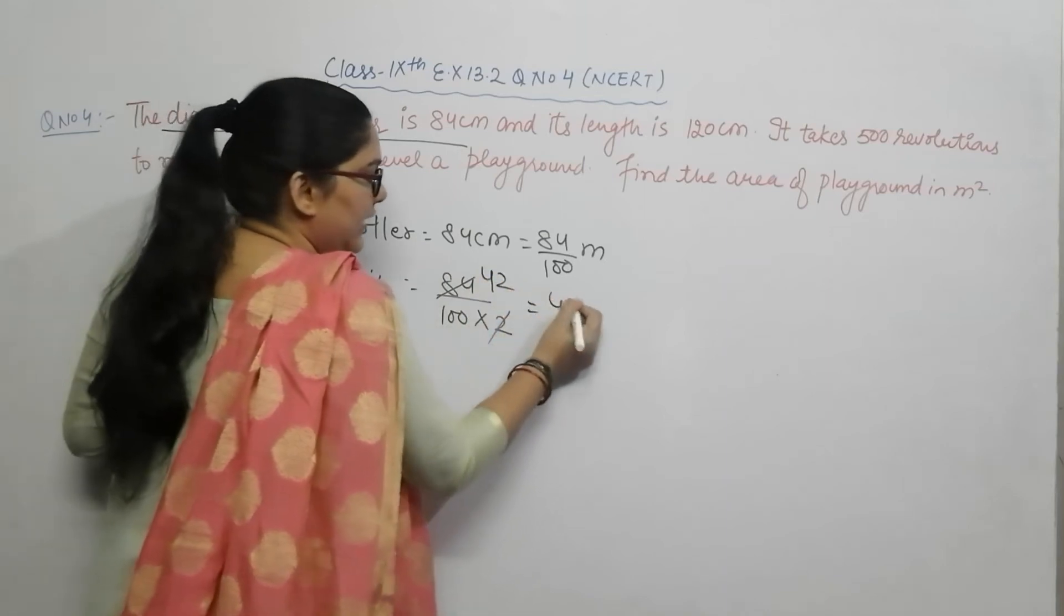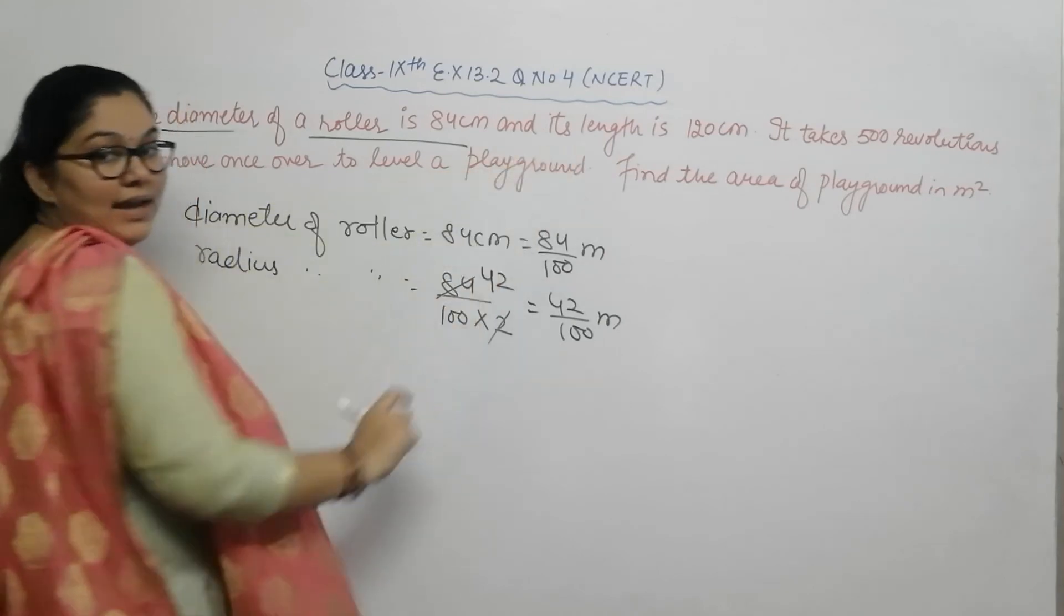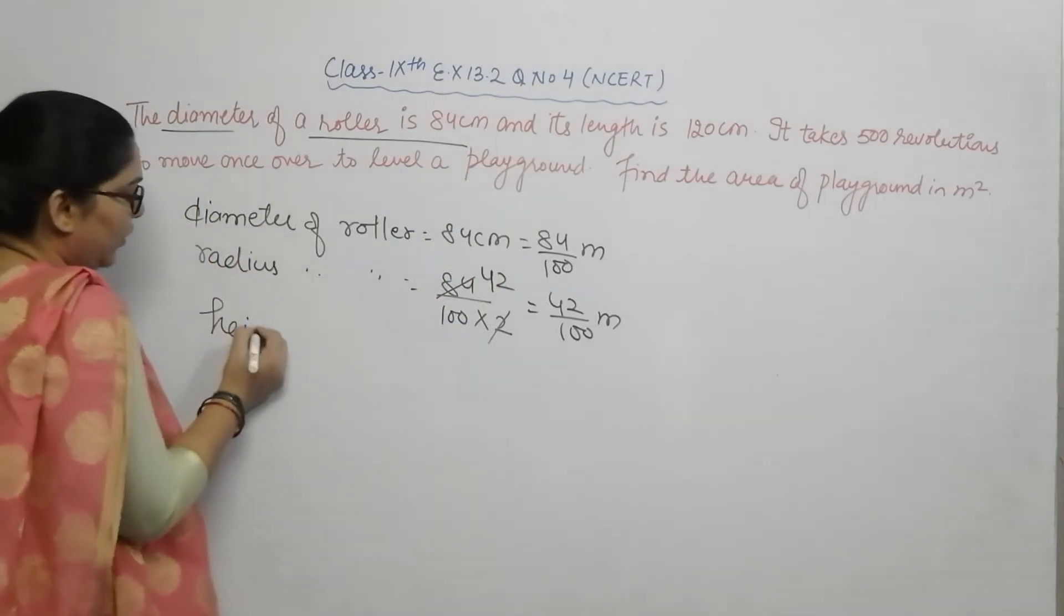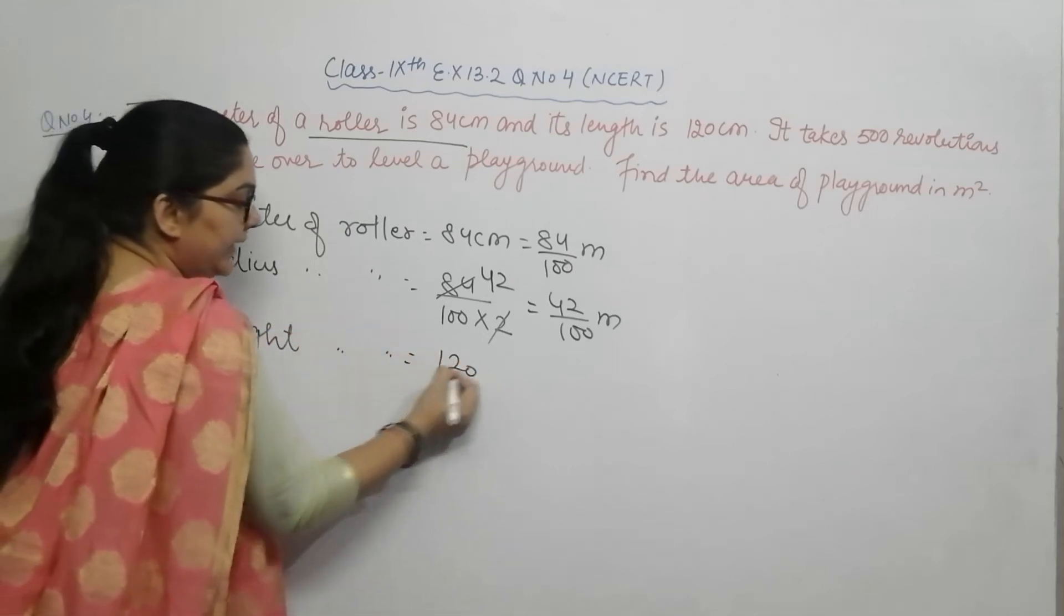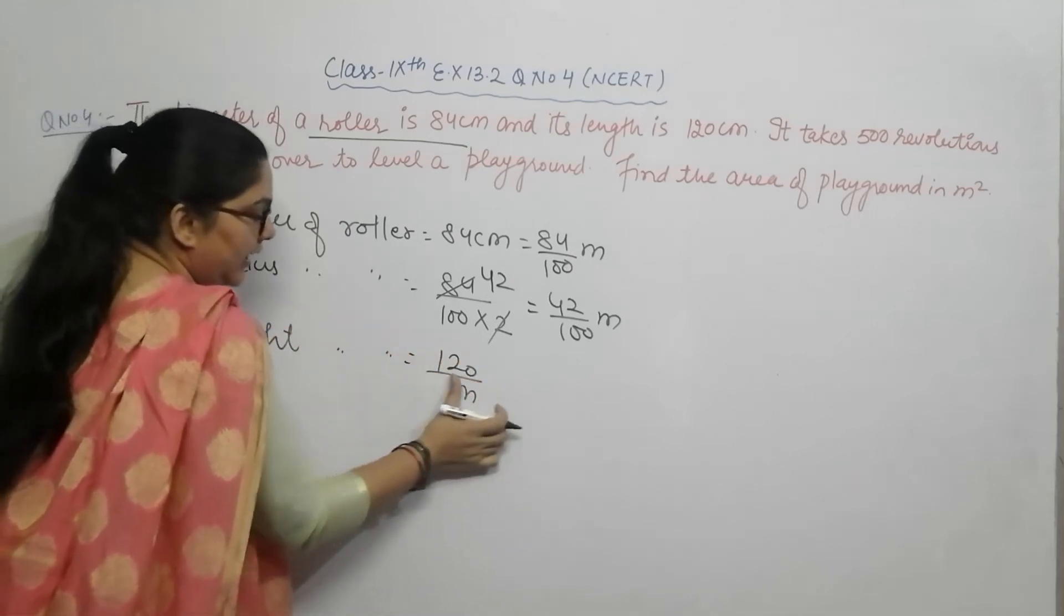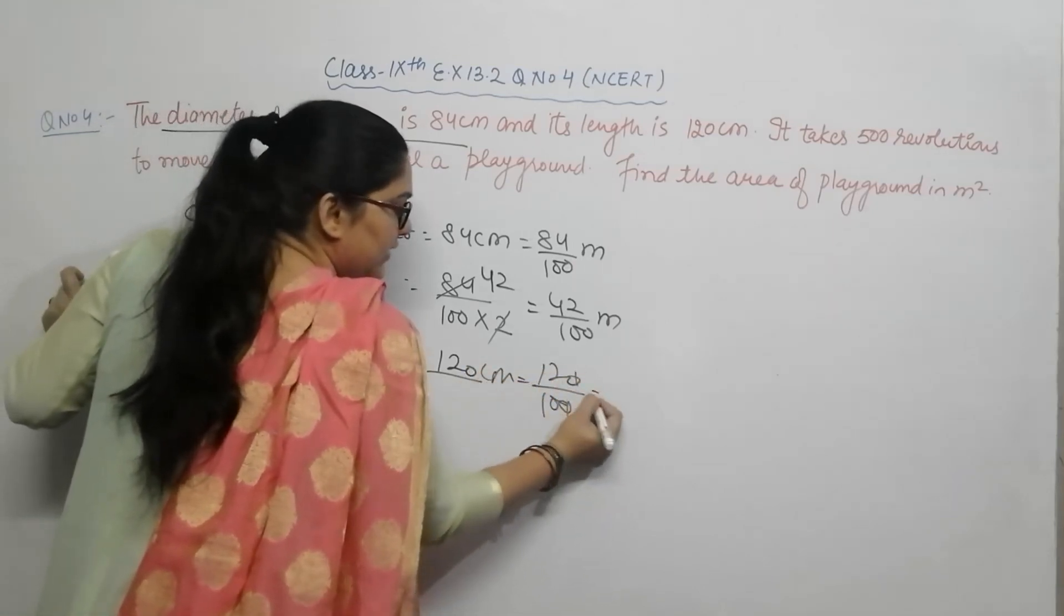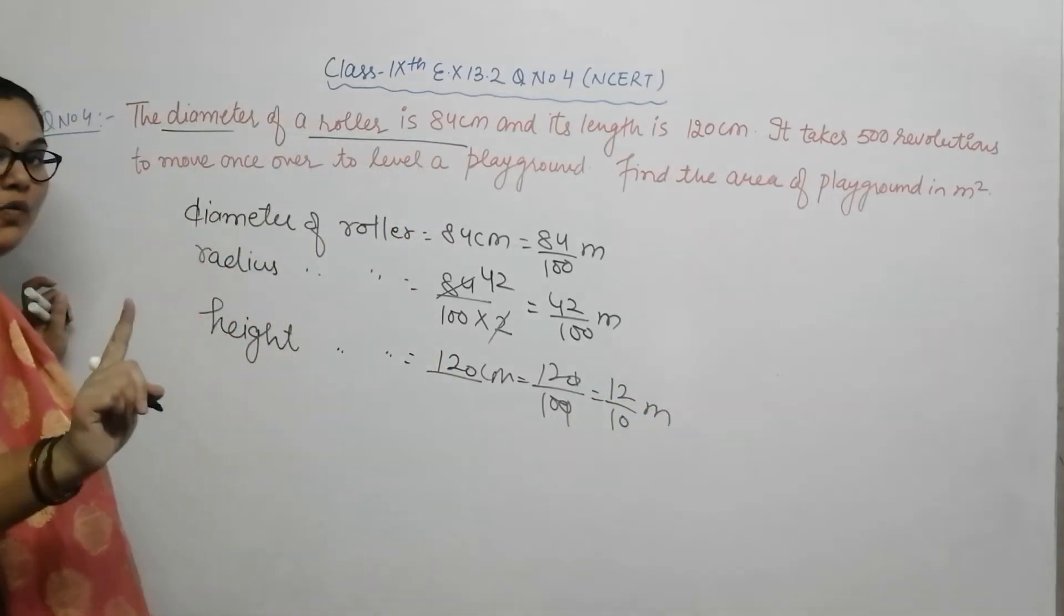Now this is your length, and length stands for height here. So height of that roller is 120 centimeter, which equals 120 by 100. Canceling zeros gives us 12 by 10 meter. Clear?